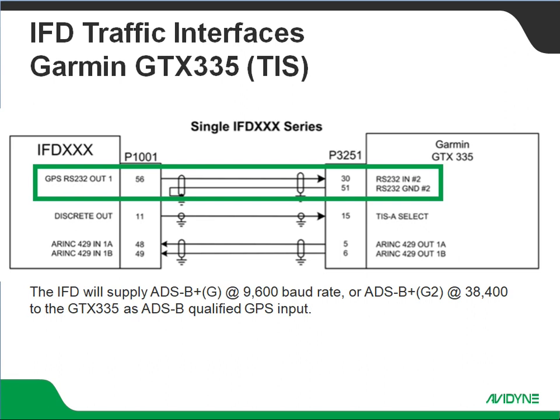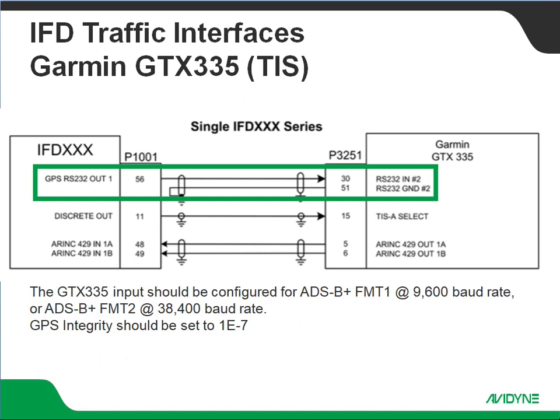Jumping right in — in order to get qualified GPS input to the GTX 335, we're going to use an RS-232 out of the IFD. We're going to set that for either ADSB Plus G, which is going to be a 9600 baud rate, or ADSB Plus G2, which is a 38400 baud rate. The GTX 335 side should be configured for either ADSB Plus Format 1 if we're going to use 9600, or ADSB Plus Format 2 if we're going to use 38400.